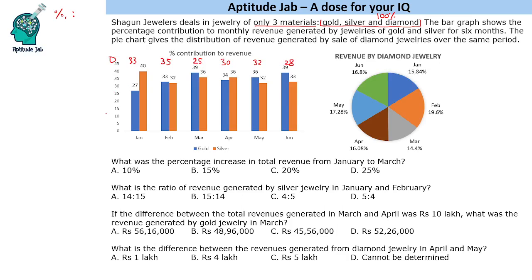The first question asks: what was the percentage increase in total revenue from January to March? The only thing we can compare with is the diamond jewellery, because we know the total revenue from diamond jewellery and its percentage over the six months. So we can find the ratio, and that is how we will solve all these questions.